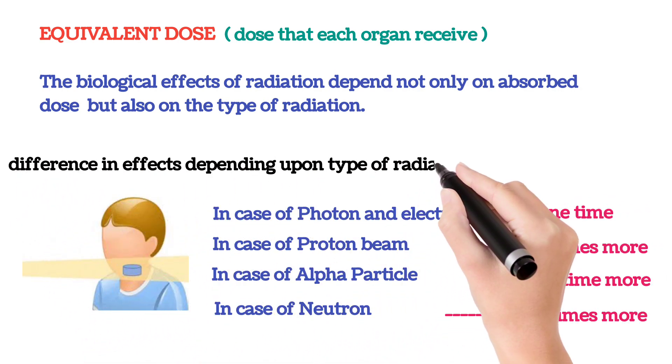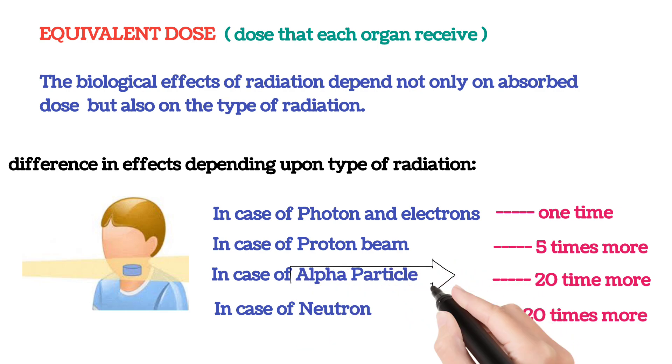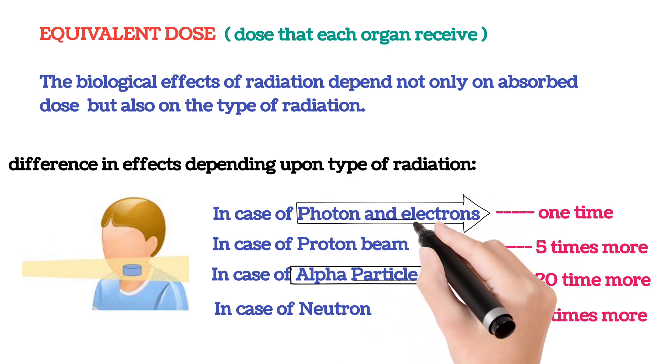It depends on which type of radiation is used. For example, in case of alpha particle, it gives 20 times more effect as compared to photon or electron beam.